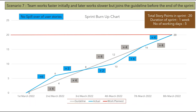In another scenario, the team works faster initially and later works slower, but joins the guideline before the end of the sprint. On the first two days, the actual line is above the guideline — the team is working faster. On days three and four, the actual line is below the guideline — the team is working slower. By the end of day four the team joins the guideline, and on the last day the team burns up 4 story points, completing all 20. No action is required.